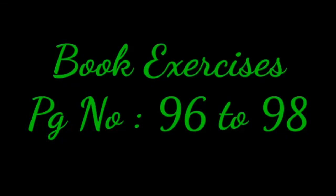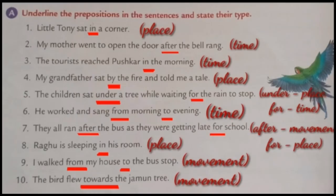Now we are moving to book exercises. All of you take your book, page number 96 to 98. Exercise A: Underline the prepositions in the sentences and state their type. The three types are prepositions of time, prepositions of place, and prepositions of movement. First one: Little Tony sat in a corner. Here, 'in' is a preposition of place.